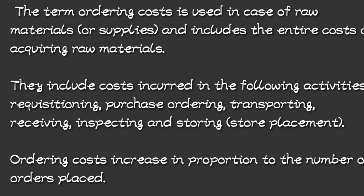Ordering costs are used in the context of raw materials or supplies and include the entire costs of acquiring those materials. They include activities like requisition, purchase ordering, transporting, receiving, inspecting, and storing the raw materials. Ordering costs increase in proportion to the number of orders placed — more orders means higher ordering costs.